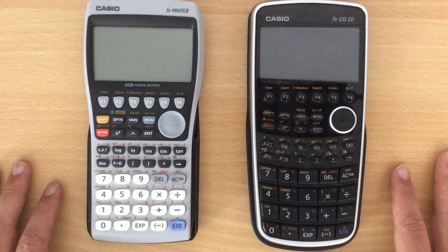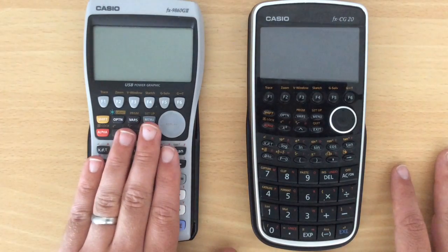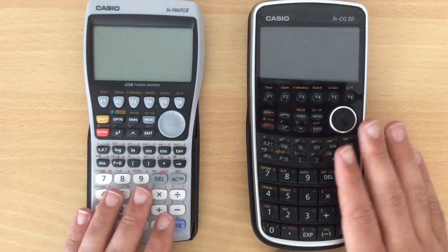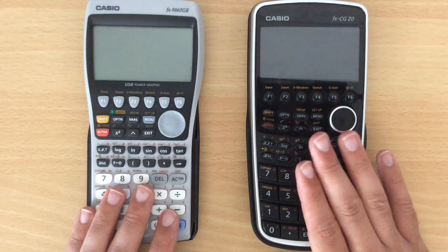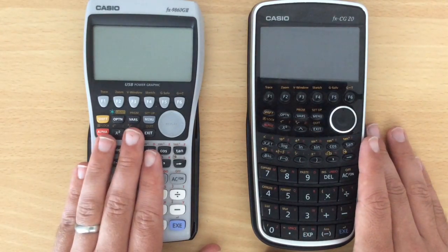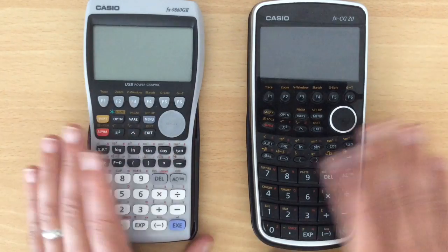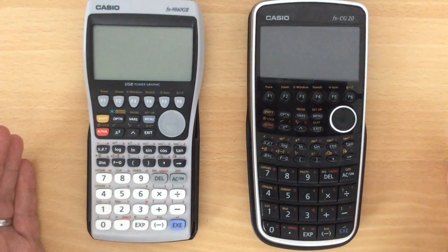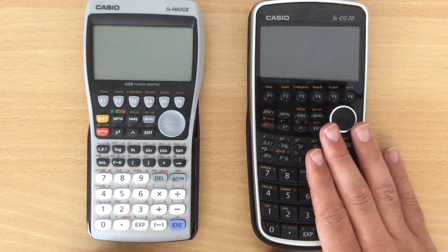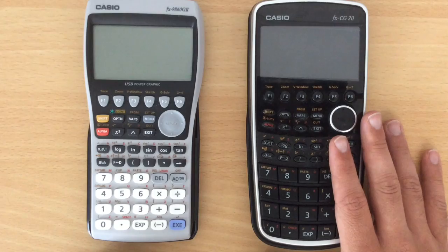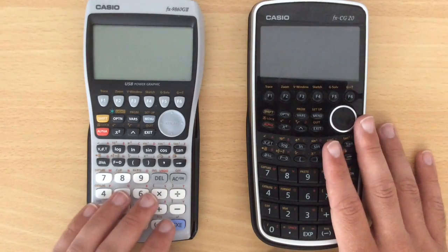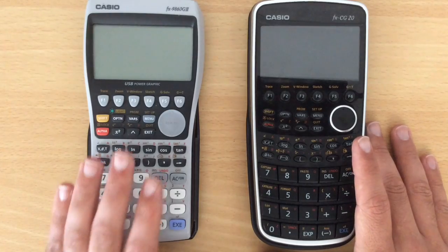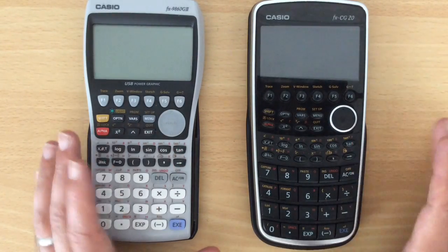So what is the difference in terms of what they do? Well, the 9860 is the older model, the CG20 is the newer one, so there's a lot of things that the CG20 will do that the 9860 can't. To be honest though, either calculator will do what you need for A-level. Given the choice, if you have the money, I would certainly go for the newer one because it does do a few new things and it's a little bit nicer in the way that it works.